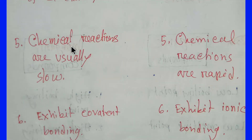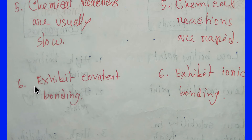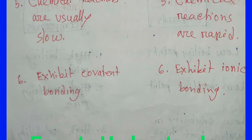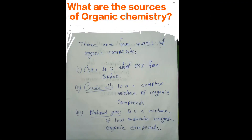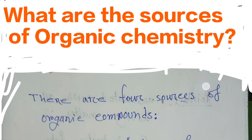In the case of organic compounds, chemical reactions are usually slow. In the case of inorganic compounds, chemical reactions are rapid or speedy. We usually get covalent bonds in organic compounds and ionic bonds in inorganic compounds.